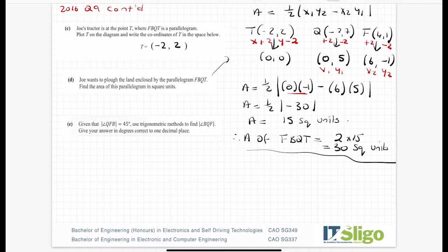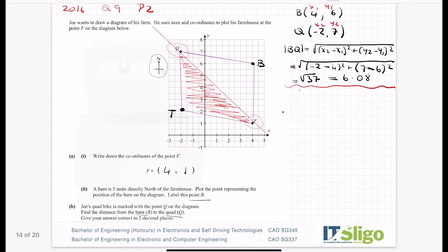Now, of course, remember that's just for half the parallelogram because it was the triangle. So therefore area of the parallelogram FBQT is equal to 2 by 15 equal to 30 square units. So that might be the easiest way to get the area of the parallelogram. So that's part D done.